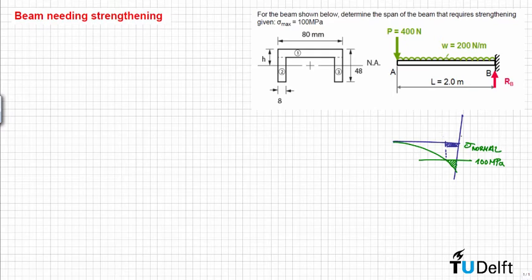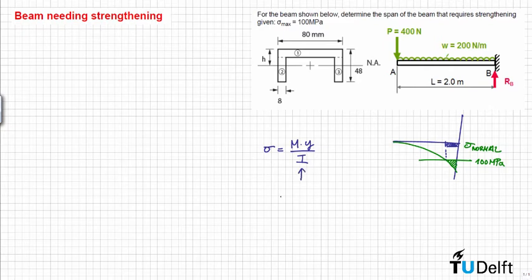In order to determine the distribution of stresses, we need to use the flexural formula: σ equals M times y divided by the moment of inertia. So we'll start by calculating the moment of inertia, the distance y, and the distribution of bending moments.